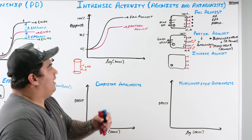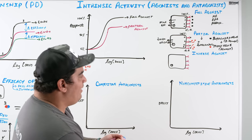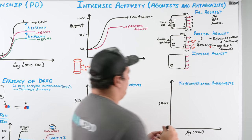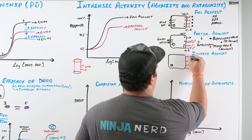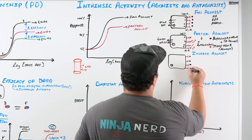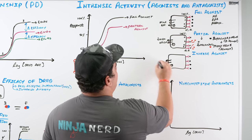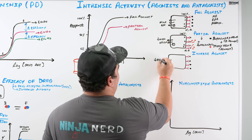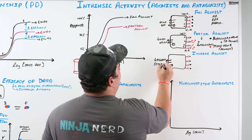Inverse agonists are another category: they bind to the receptor and produce an effect opposite to the endogenous agonist — reducing activity below the receptor's basal level of about 12%.